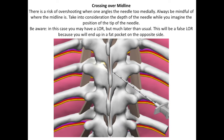What happens when you cross over the midline? There is a risk of overshooting when one angles the needle too medially. Always be mindful of where the midline is. Take into consideration the depth of the needle while you imagine the position of the tip of the needle. Be aware that in this case you may have a loss of resistance, but much later than usual. This will be a false loss of resistance because you will end up in a fat pocket on the opposite side.